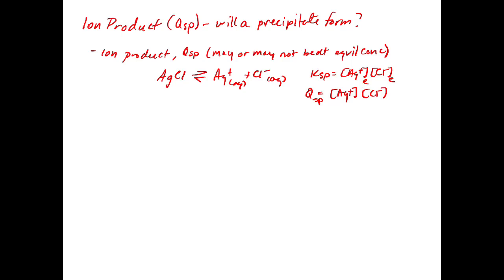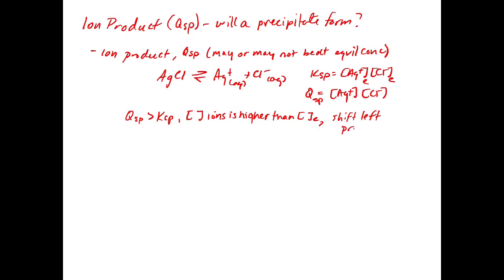Let's look at some possibilities. If Qsp is greater than Ksp, that means the concentration of the ions is higher than what should be at equilibrium. If Q is large and greater than Ksp, that tells us we have too many ions in solution. So what's going to happen is we're going to shift to the left, and we get a precipitate. This thing is going to shift to the left to reduce those concentrations, and some silver chloride is going to come out of solution.